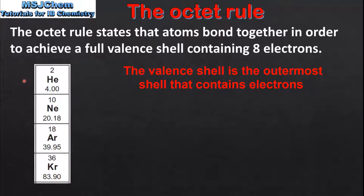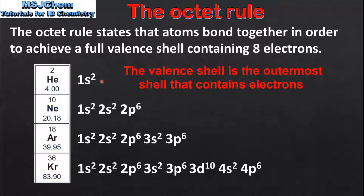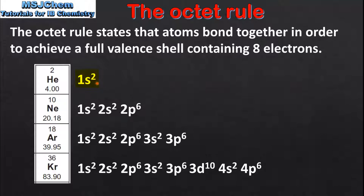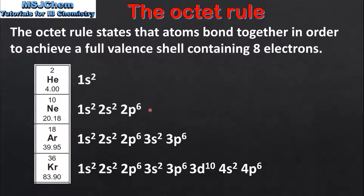Here we can see the symbols of the first 4 noble gases: helium, neon, argon, and krypton. If we look at the electron configurations we can see that each noble gas has a full valence shell. For helium that's the 2 electrons in the 1s sublevel. For neon that's the 2 electrons in the 2s sublevel and the 6 electrons in the 2p sublevel. For argon that's the 2 electrons in the 3s sublevel and the 6 electrons in the 3p sublevel. And for krypton it's the 2 electrons in the 4s sublevel and the 6 electrons in the 4p sublevel. So as we can see, all noble gases with the exception of helium have 8 electrons in their valence shells.